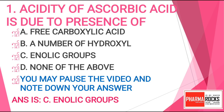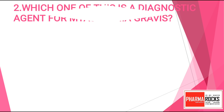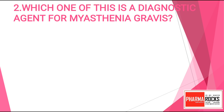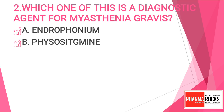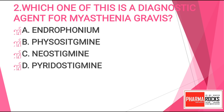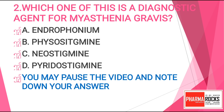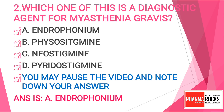Question 2: Which one of these is a diagnostic agent for myasthenia gravis? Option A: edrophonium, Option B: physostigmine, Option C: neostigmine, or Option D: pyridostigmine. You may pause the video and note down your answer. The correct answer for this question is Option A, edrophonium.